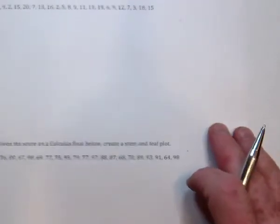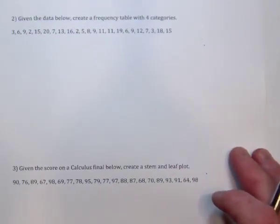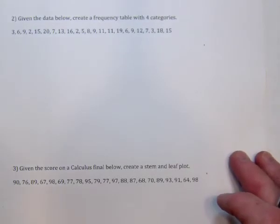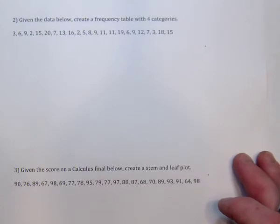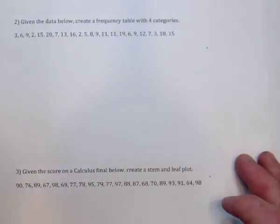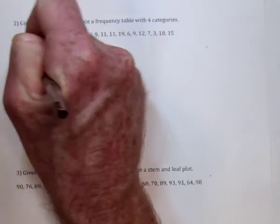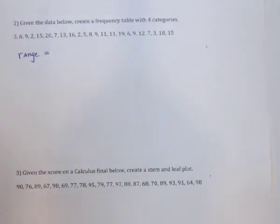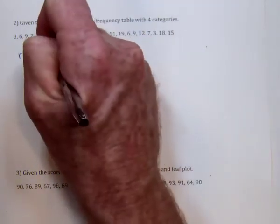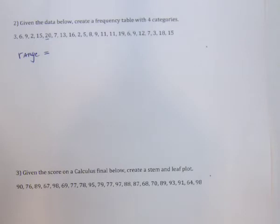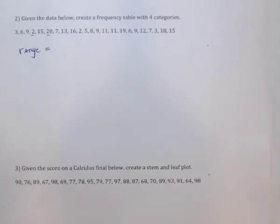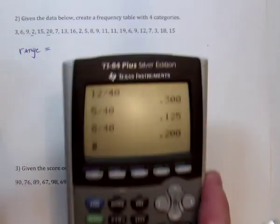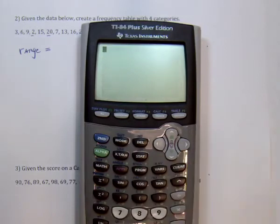For problem two, we've got a list of data and we need to create a frequency table with four categories — make a table from scratch with these numbers. The first thing to do is find the range. The biggest number is 20 and the smallest number is 2. We're going to use calculators, so here is the TI-84.